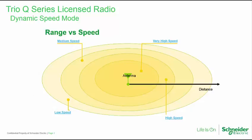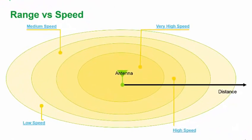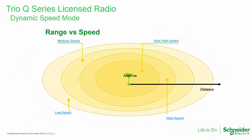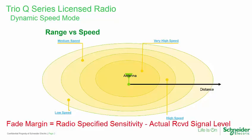Consider the example in this diagram. When communicating, radio signals from the entry point radio diminish in strength as the signal propagates over distance. In a system without dynamic radio data rate selection, the user would need to configure all radios in the system for a data rate which would provide reliable communication to the most distant site. In such systems, a minimum of 20 decibels fade margin is typically designed into the system. Fade margin is the difference between the radio's specified sensitivity — its minimum ability to hear — and the actual received signal level.